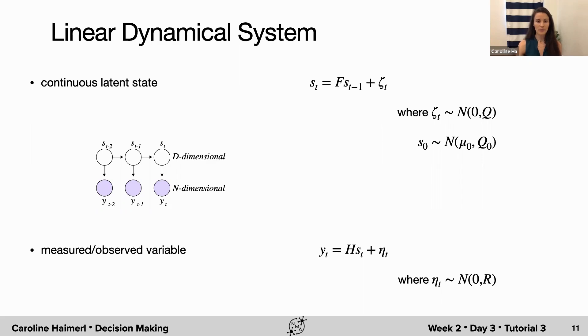This latent variable S drives the observed or measured data Y, which has its own Gaussian noise term, with its own covariance R. We just see this also in the graphical model. We have this latent state that directly drives what we measure in the data.